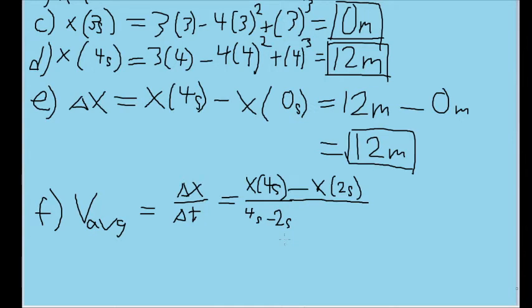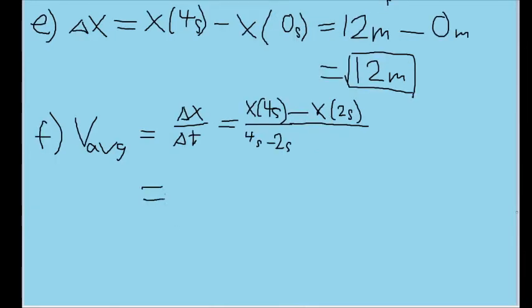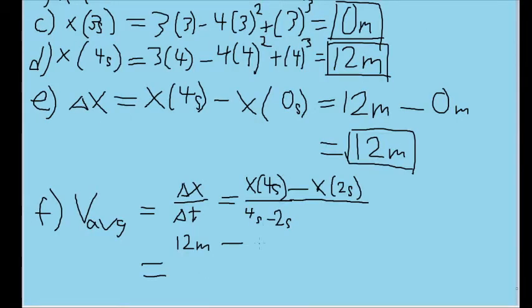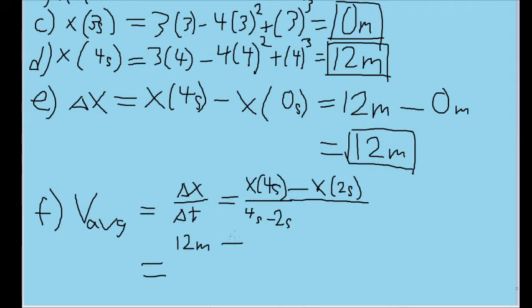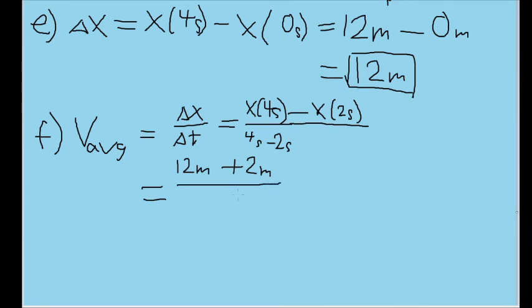We'll substitute in the values we calculated above. For X at four seconds, that's 12 meters, and we're subtracting the value at two seconds, which we found to be negative two. So that's 12 minus negative two. The minuses cancel out and become plus, so that becomes 12 meters plus 2 meters, all divided by 2 seconds. This gives us 14 meters divided by 2 seconds, which equals 7 meters per second. That is our average velocity over this time interval.